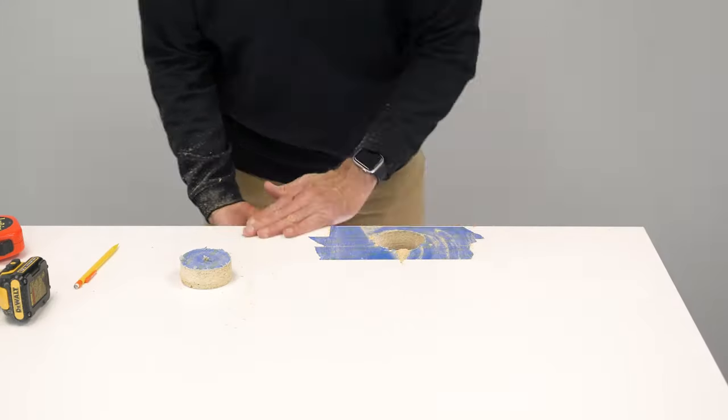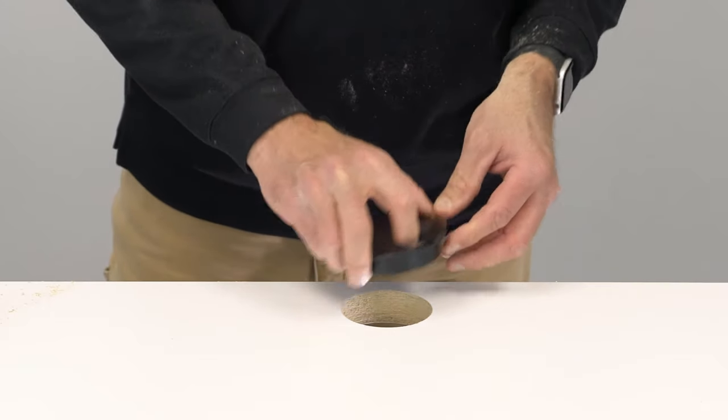Just clean up the top, drop in the new grommet or accessory that fits the 3-inch hole and you're ready to go.